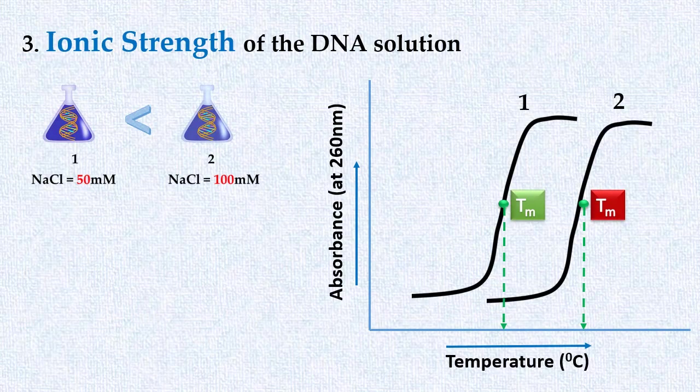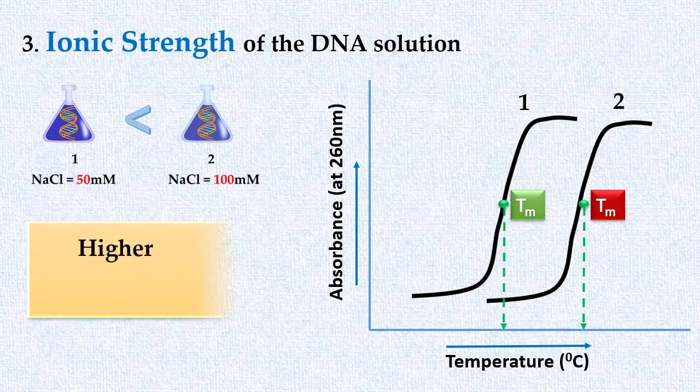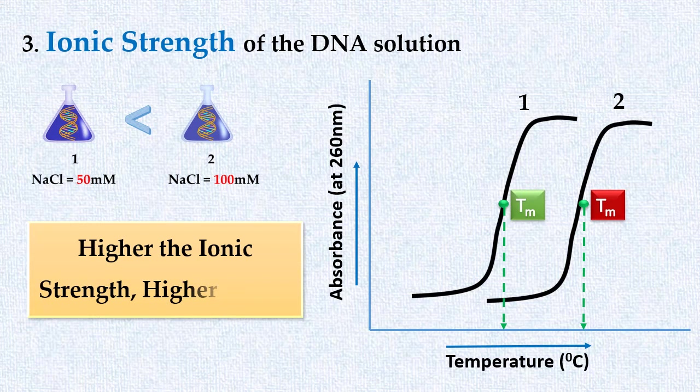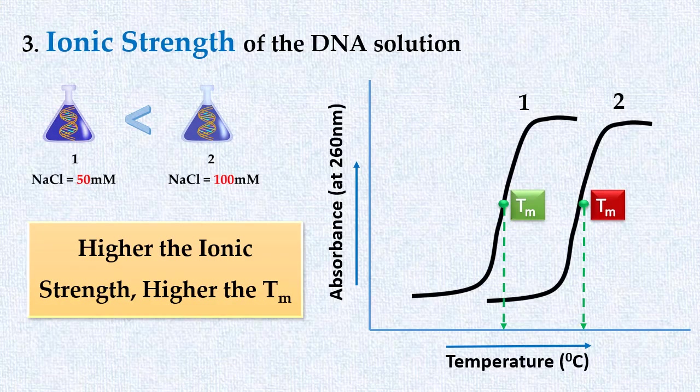So we can conclude that higher the ionic strength of a DNA solution, more heat energy required, and higher will be the melting temperature. Similarly, lower the ionic strength, lower will be the melting temperature.